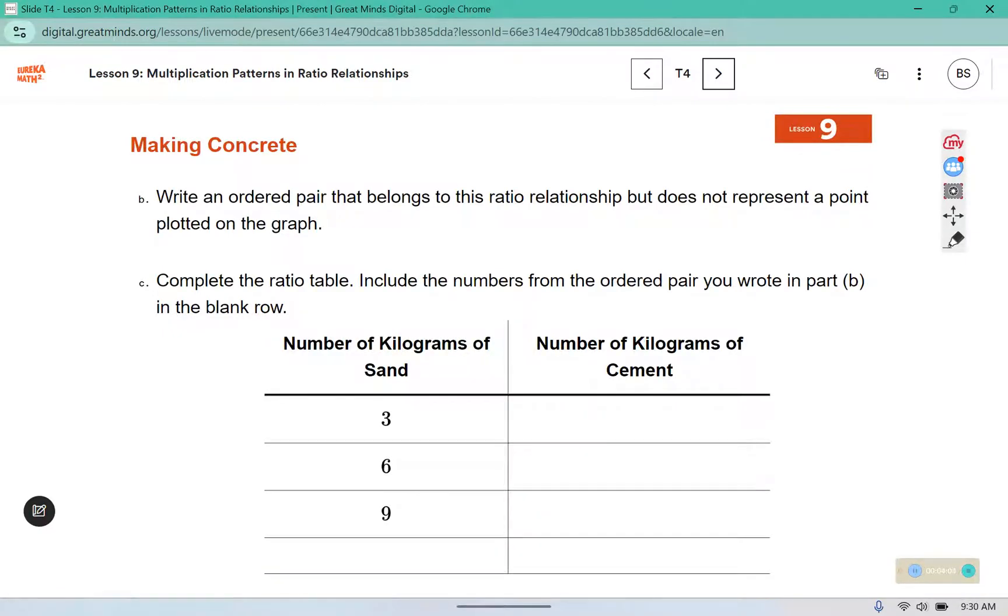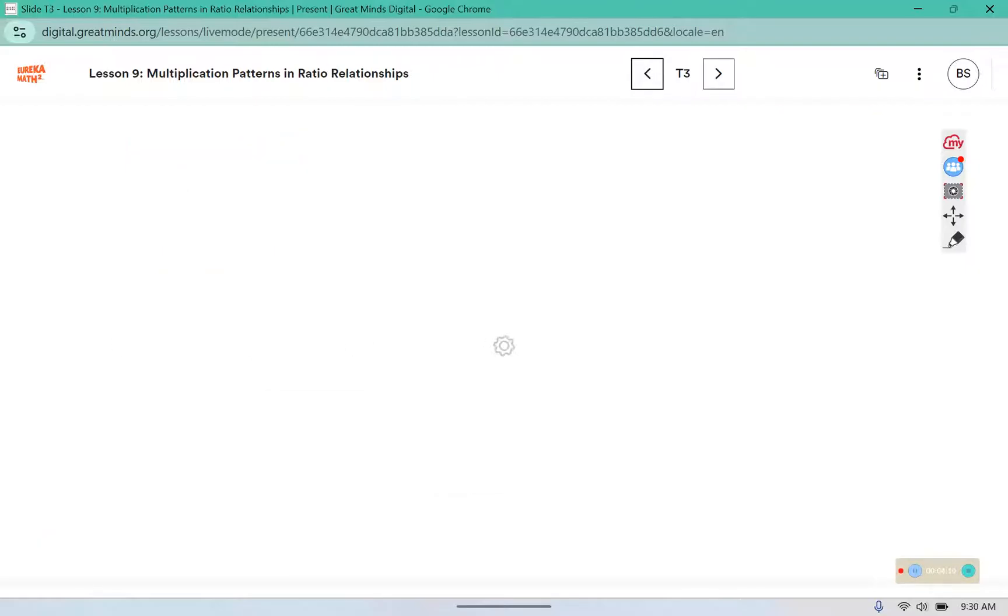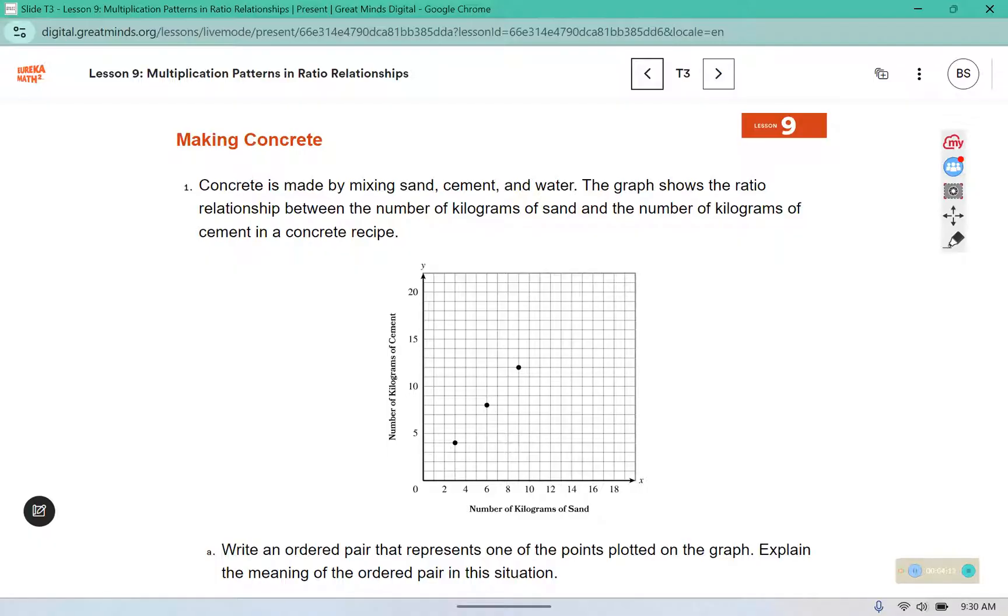Write an ordered pair that belongs to this ratio relationship, but does not represent a point plotted on the graph. So the highest they went was 9, 12, but if we kept that pattern of 3 and 4 going, we could go 3 over and 4 up.